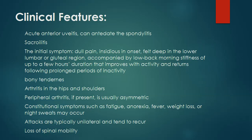Arthritis in the hips and shoulders may occur. Peripheral arthritis, if present, is usually asymmetric. Constitutional symptoms such as fatigue, anorexia, fever, weight loss, or night sweats may occur. Attacks are typically unilateral and tend to recur. Loss of spinal mobility, with limitation of anterior flexion, lateral flexion, and extension of the lumbar spine, is seen.